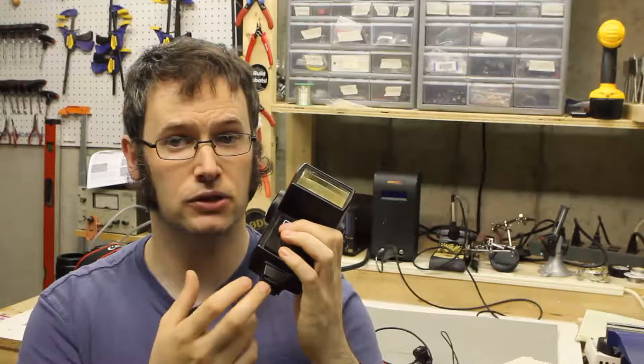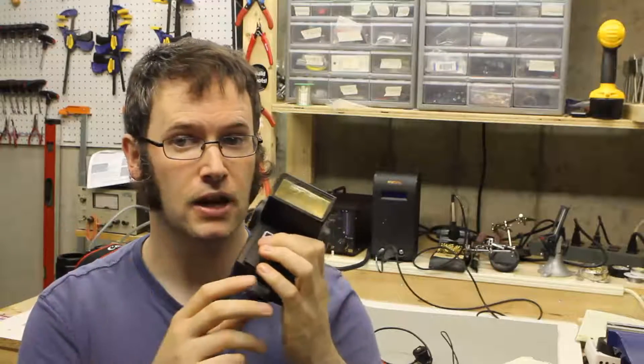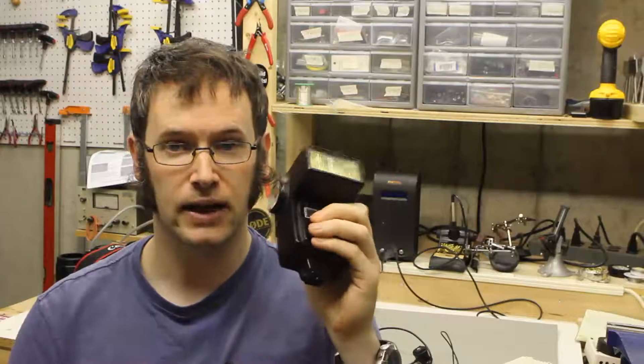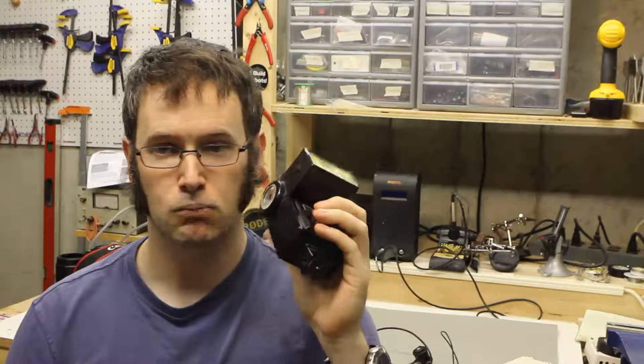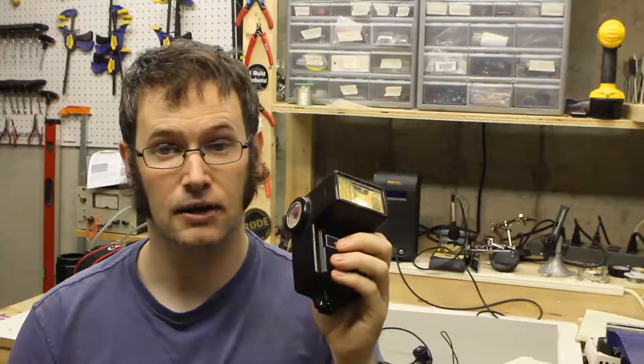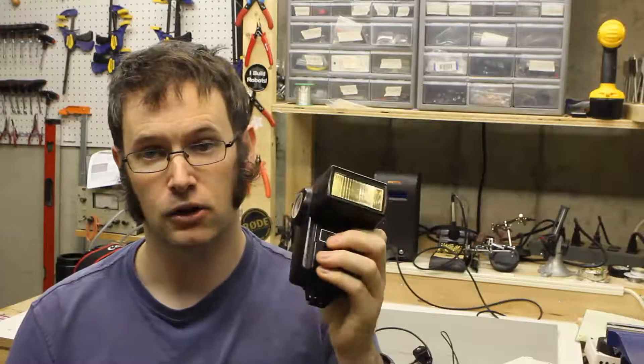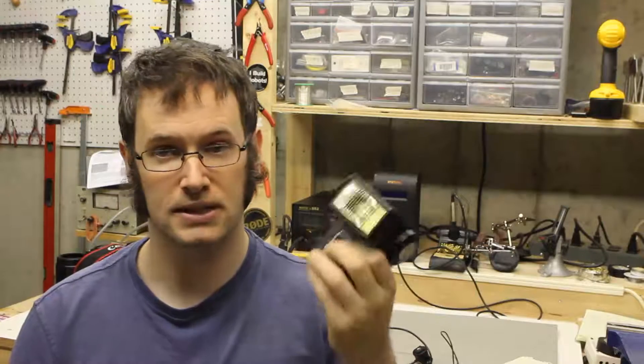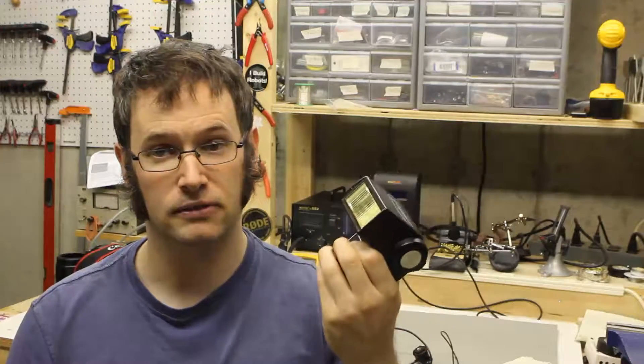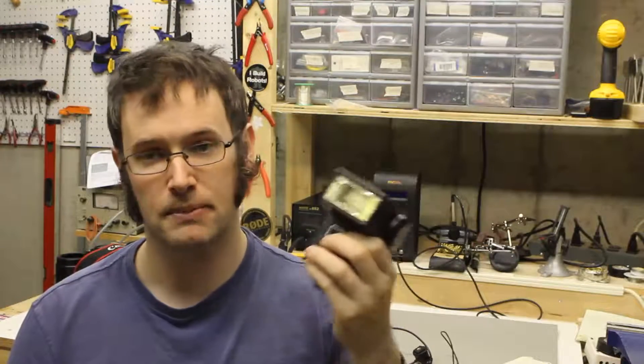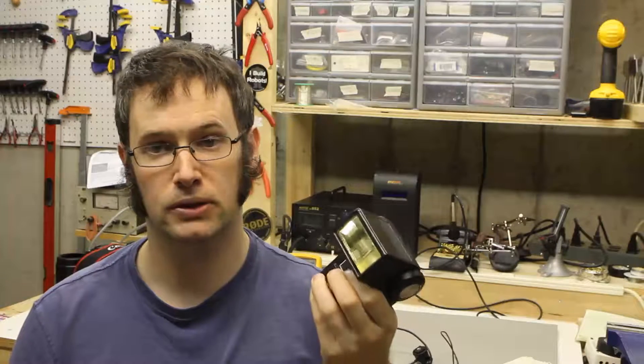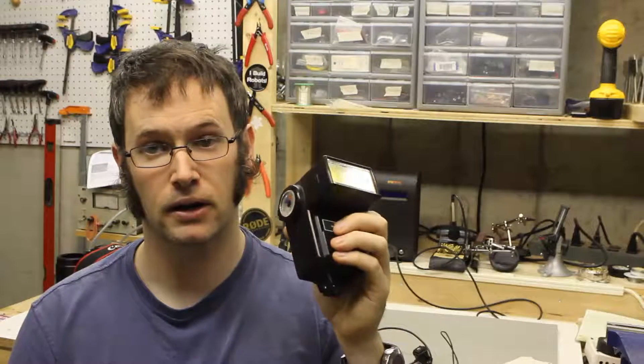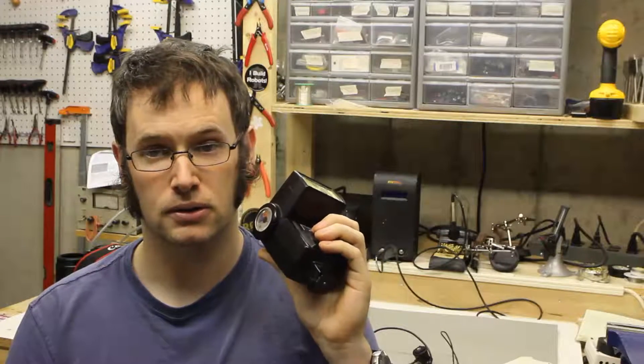Different flashes use different trigger voltages. This old Vivitar flash has a very high trigger voltage, way over a hundred volts, and that can actually damage a lot of modern cameras. If you look in your user guide, they'll say don't use high voltage flashes with this camera. It could damage the flash or the camera, or won't function properly. Make sure you're careful about that. Definitely don't want to damage your camera.